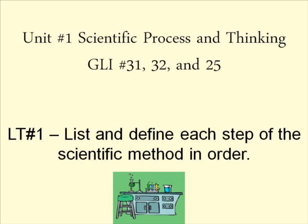This lesson is about the scientific process and thinking. It covers what we call GLI 31, 32, and 25. Our first objective, or learning target, is to listen to find each step of the scientific method in order.